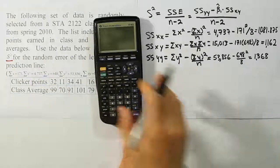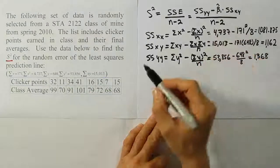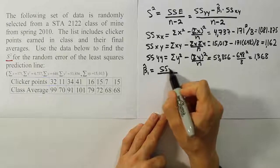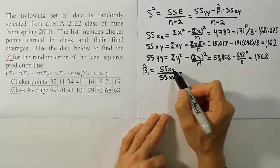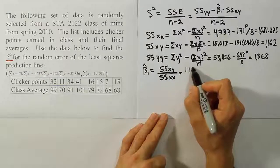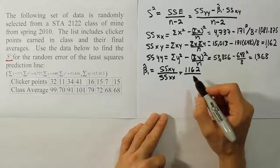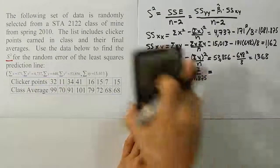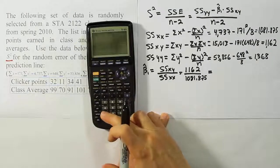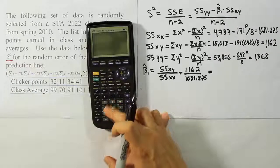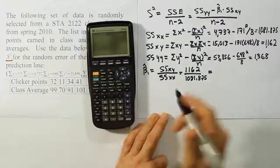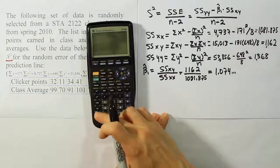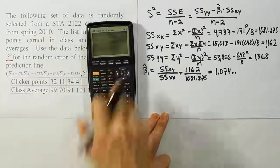So from here the next step of the problem is to take those sum of square values and determine what beta 1 is. So let's get our beta 1 hat estimate of the slope value. We're going to have the sum of squares XY over the sum of squares XX. Sum of squares XY turns out to be 1162 divided by the sum of squares for XX is 1081.875. So we'll have 1162 divided by 1081.875. The answer turns out to be 1.074 dot dot dot. Let's store that in our calculator as the variable X so we can use it for later without having to round it.